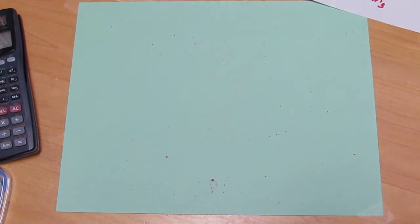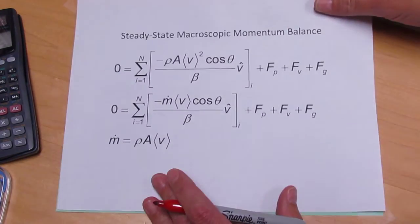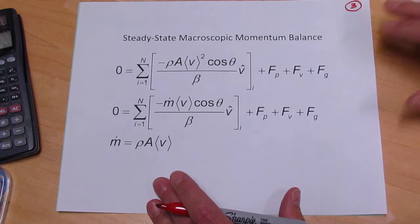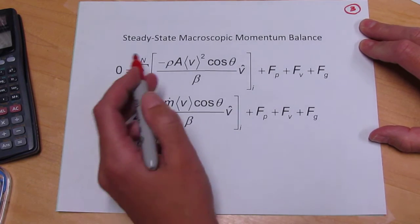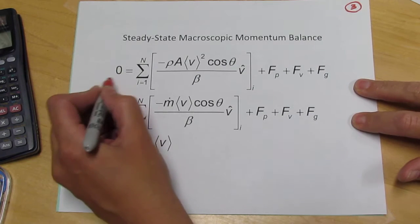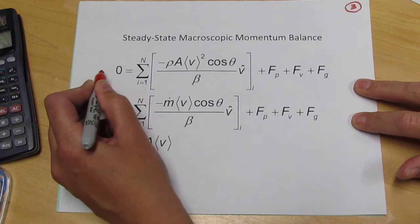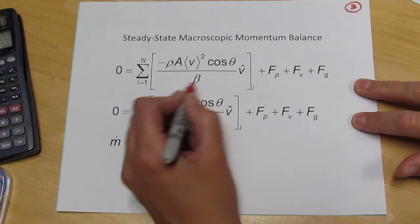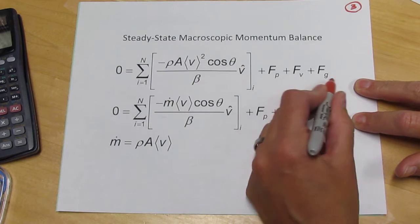The remaining physics we can apply to this situation is that momentum is conserved. So this is the steady state macroscopic momentum balance. It says that the rate of change of momentum, which is zero at steady state, is equal to a convective term and the sum of the forces.